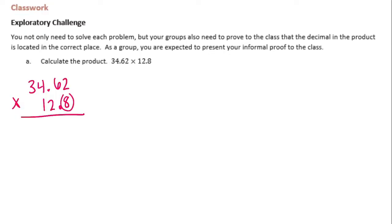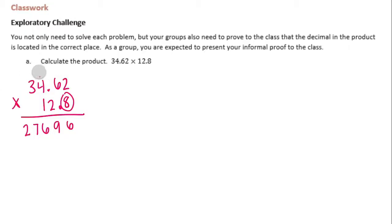Starting with eight: eight times two is sixteen, carry the one. Eight times six is forty-eight, plus one is forty-nine, carry the four. Eight times four is thirty-two, plus four is thirty-six, carry the three. Eight times three is twenty-four, plus three is twenty-seven. I'm going to erase what I carried so I don't get confused.